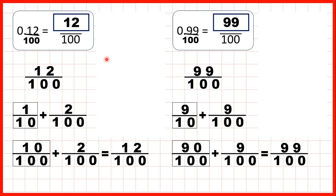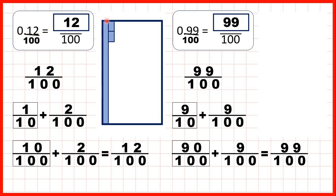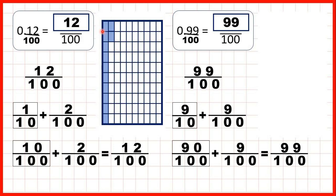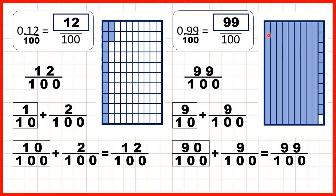To make clear what's happening: we can show 0.12 as 1 tenth and 2 hundredths. If we want to show that as a fraction with a denominator of 100, we split our fraction bar into 100 pieces and we can see that we have 12 pieces, because 1 tenth is the same as 10 hundredths. For 0.99, we can show 9 tenths and 9 hundredths, and splitting the fraction bar into 100 equal pieces shows we have 99 pieces, because 9 tenths becomes 90 hundredths.